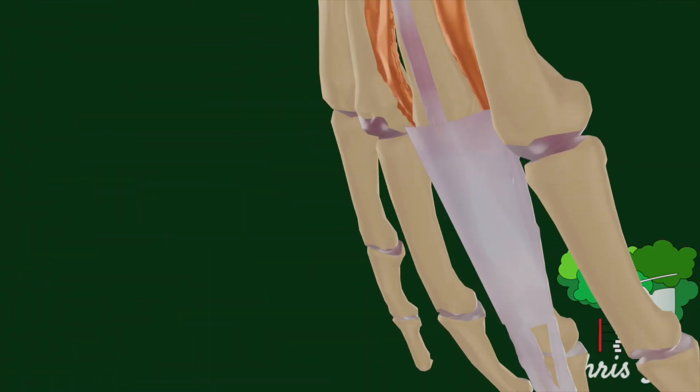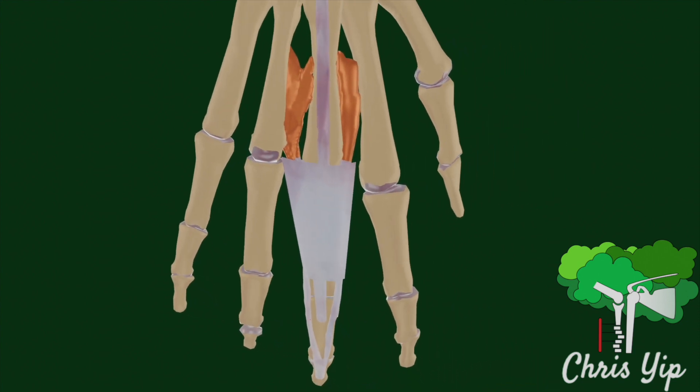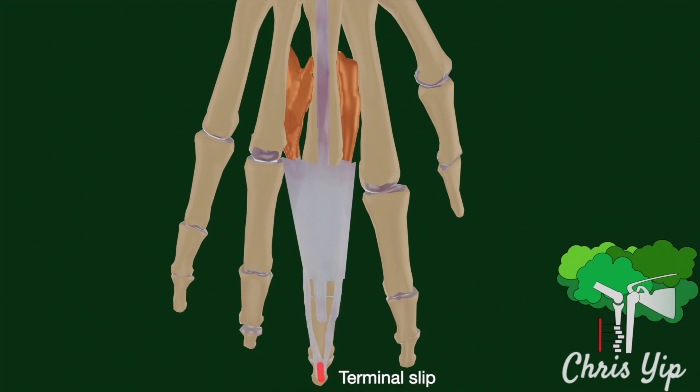At the distal end of the extensor hood, two parallel tendons called the lateral bands emerge, which join together as the terminal slip to insert at the base of the distal phalanges.